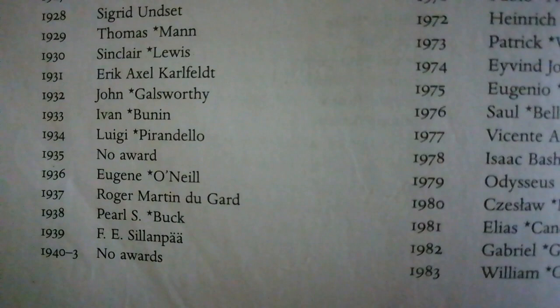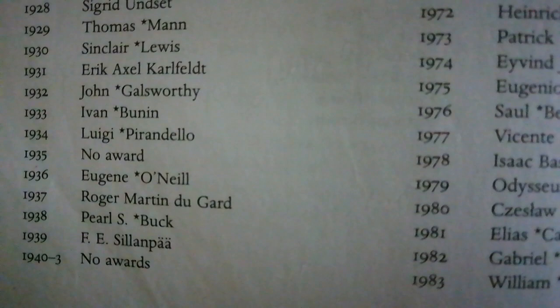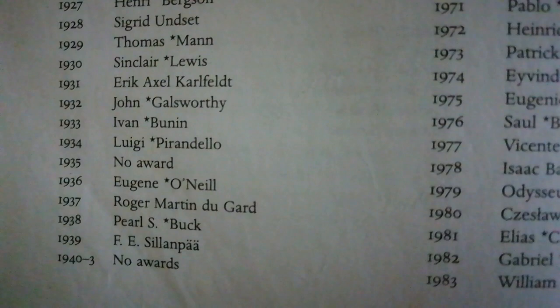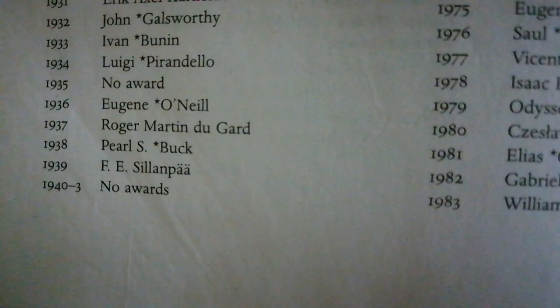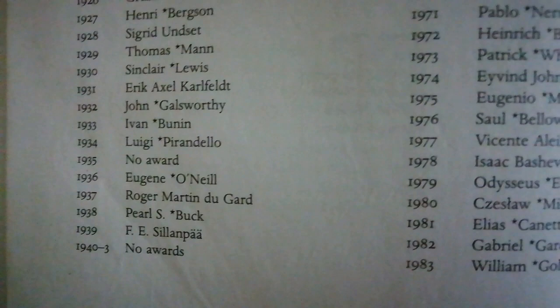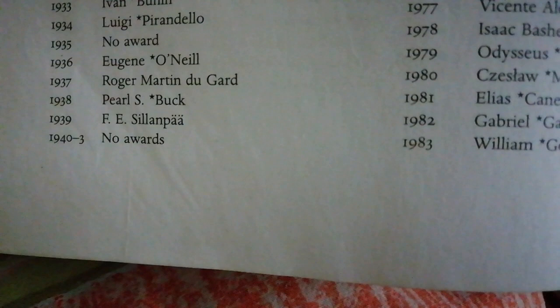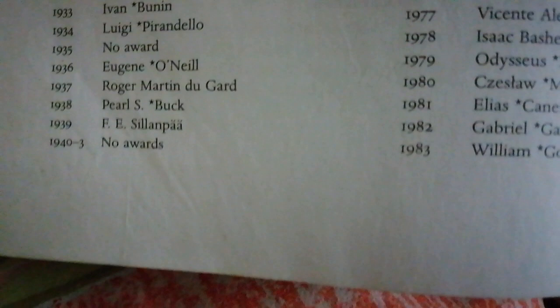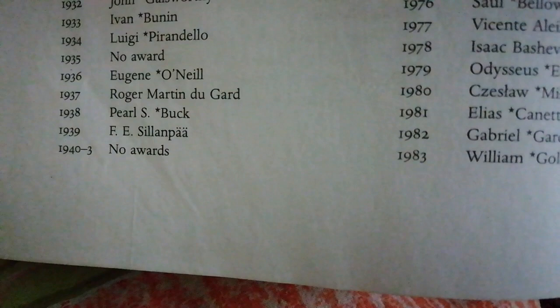G.B. Shaw is a world record holder — the only Nobel laureate who also got an Oscar award for the screenplay of his own play made into a movie. Another very important one is 1929 Thomas Mann, very famous writer. Similarly, Sinclair Lewis 1930, very famous. 1932 John Galsworthy — I am mentioning these names especially because these writers are much more famous and are generally asked in literature exams.